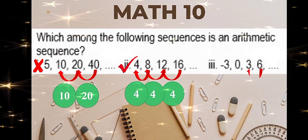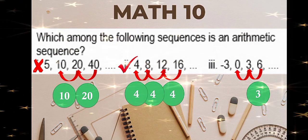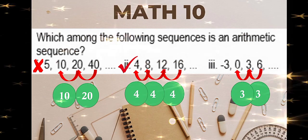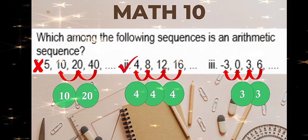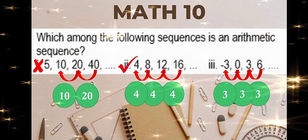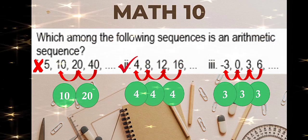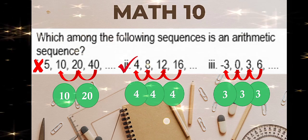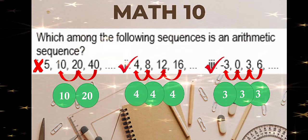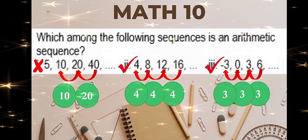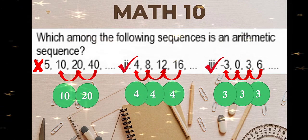In number 3, 6 minus 3 is 3. 3 minus 0 is 3 also. And 0 minus negative 3 is 0 plus 3, or that is 3. The common difference here is 3. Therefore it is an arithmetic sequence. So among the choices, only 2 and 3 are arithmetic sequences.